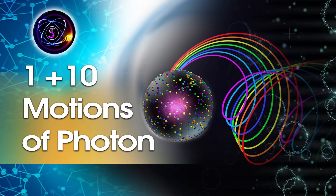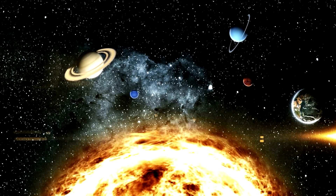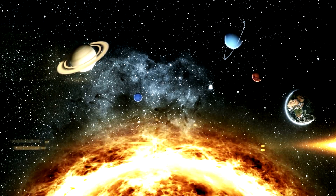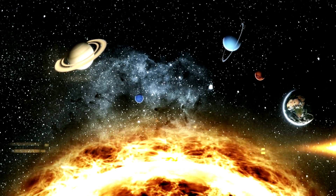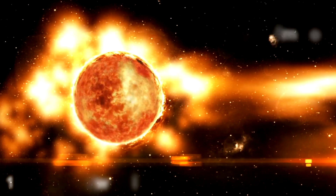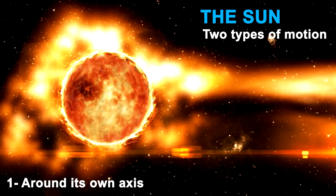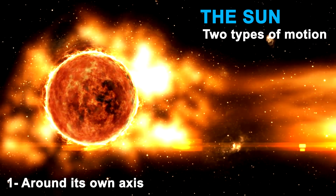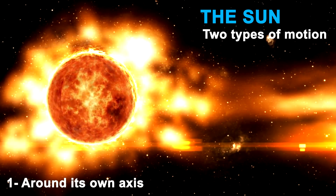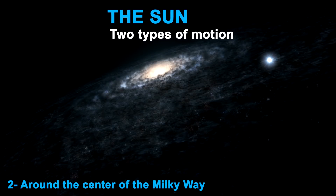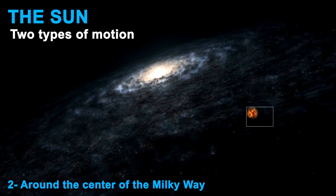1 plus 10 motions of photon. If we consider the solar system, we will find out that the moon turns around the Earth as the Earth rotates around the Sun, and the Sun revolves around the center of the Milky Way. The Sun has two distinct motions: one around its own axis, and the other around the center of the Milky Way.